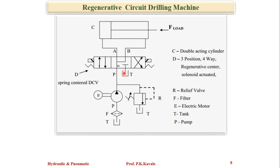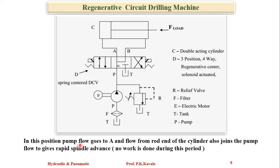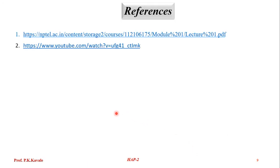This is exactly the application of the regenerative circuit. In this position, pump flow goes to port A, and flow from the rod side of the cylinder also joins the pump flow to give rapid spindle advance. No work is done during this period. When idle, the spindle should return to its normal condition.